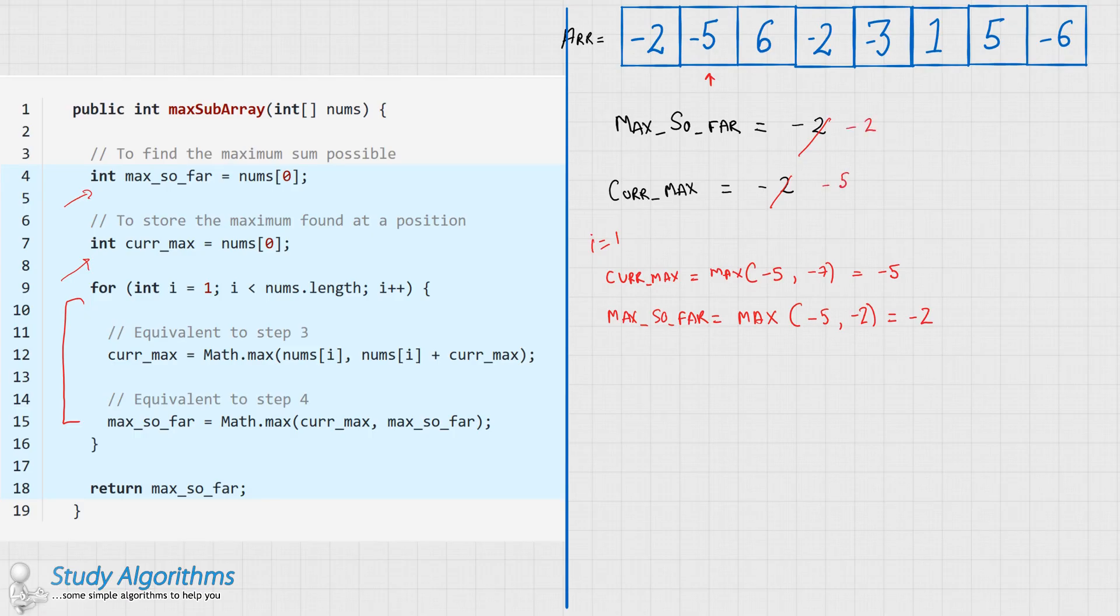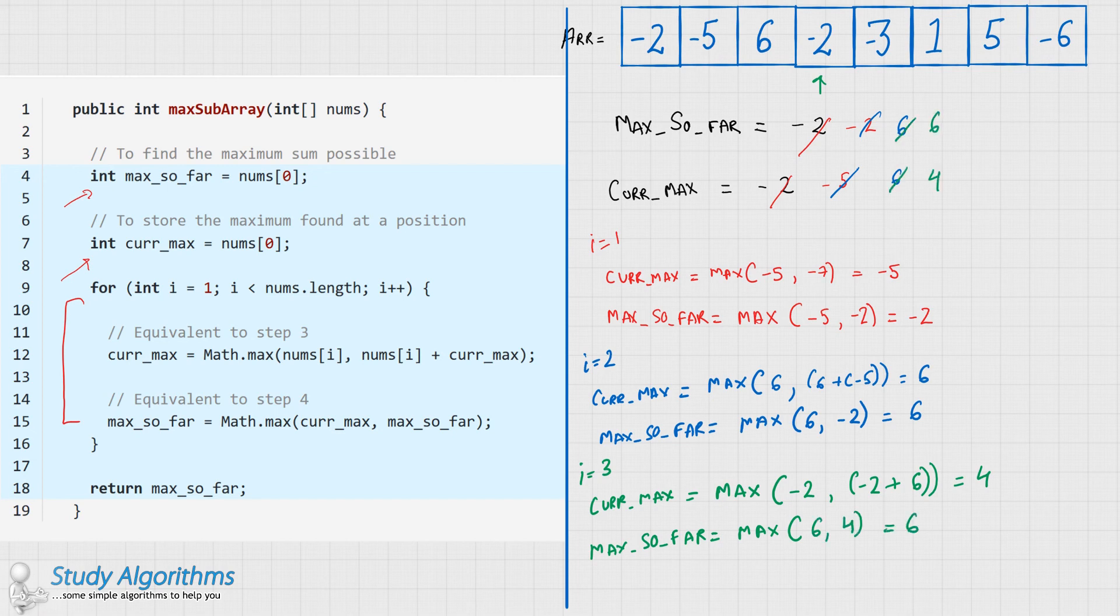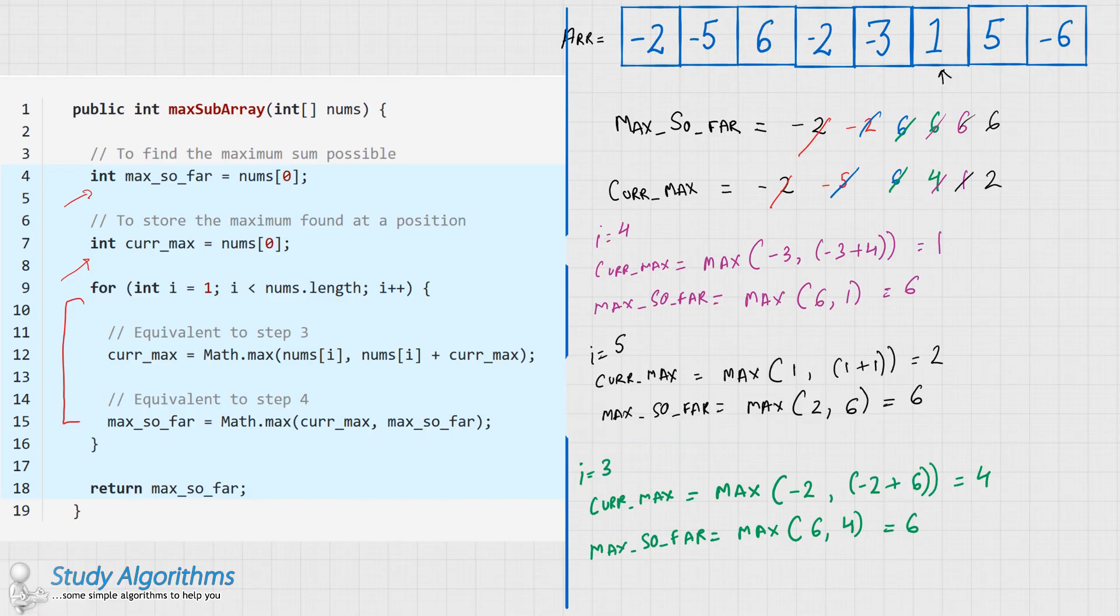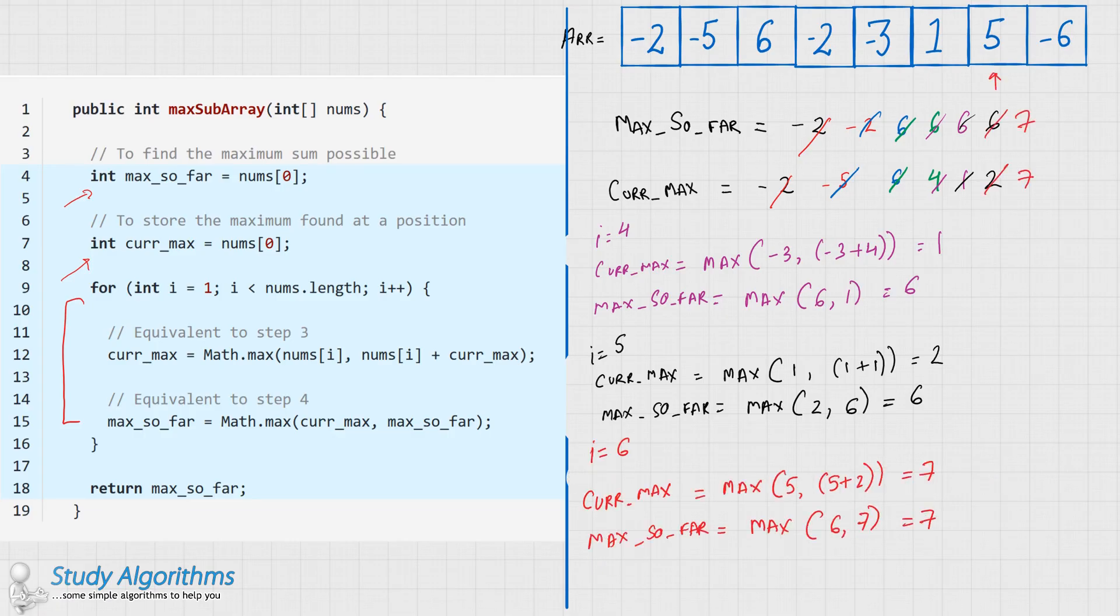this. For i equals to 2. For i equals to 3. Going forward with i equals to 4. Going next with i equals to 5. Going forward with i equals to 6. And lastly, going forward with i equals to 7.